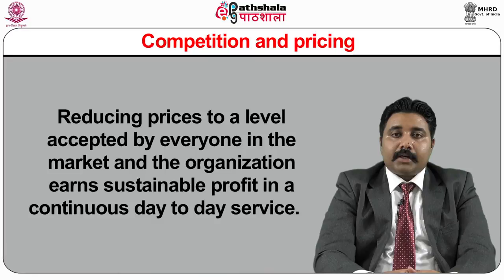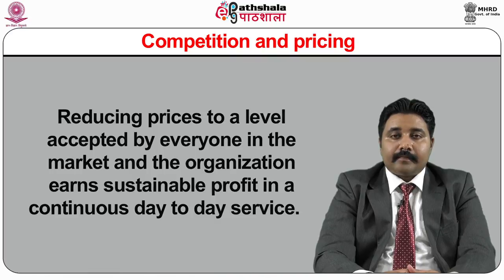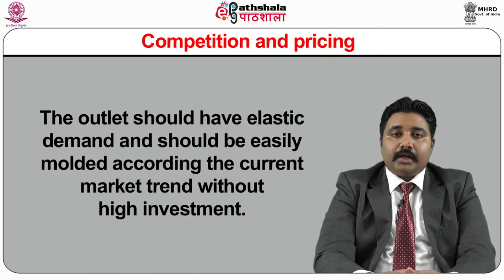Profit pricing factors in profit requirements and non-food expenses into menu item selling prices. For example: allowable food cost equals $300,000 forecasted food sales minus $189,000 non-food expenses minus $115,000 profit requirement, equaling $196,000. The budgeted food cost percentage equals $196,000 divided by $300,000, equaling 32%. Competition and pricing requires knowing competitors' menus, their quoted prices, and guest preferences, then reducing prices to a level accepted by the market to earn sustainable profit.